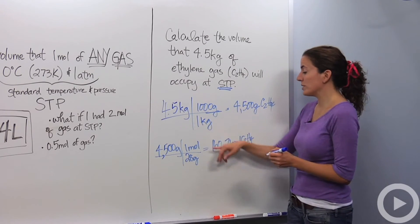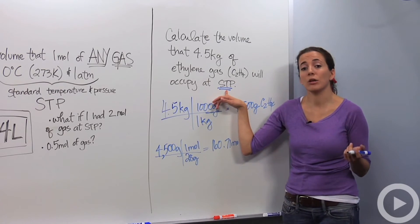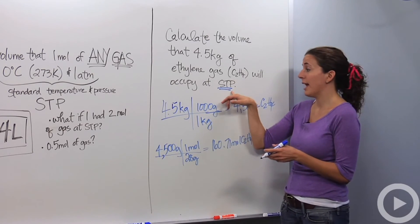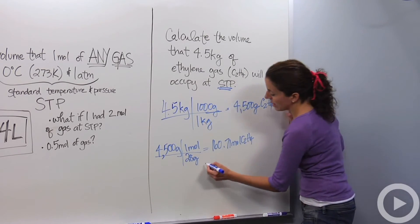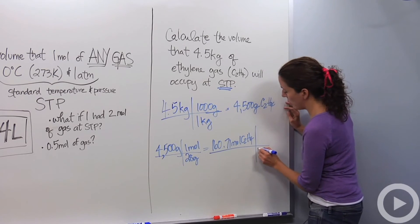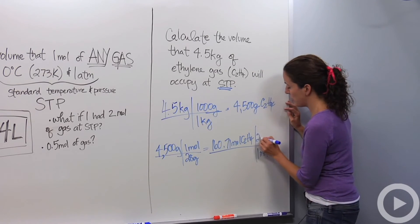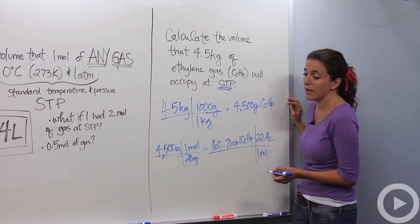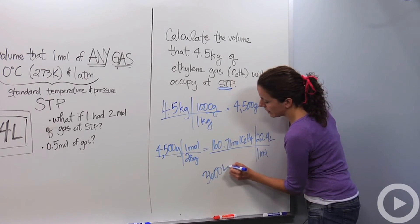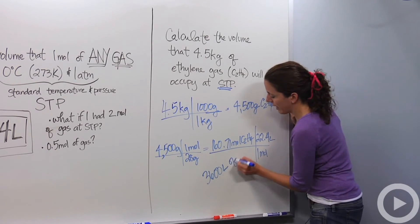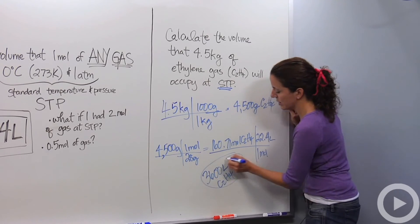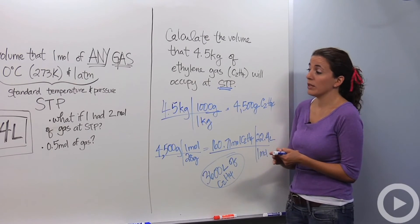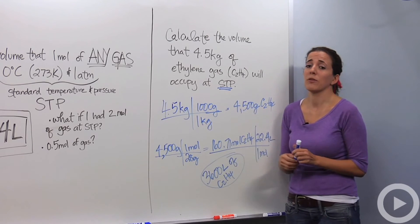So that's how many moles we have, and our conditions are STP. Now for the volume: I'm going to use my 22.4 liters per mole, because any gas at STP is going to be 22.4 liters per mole. I'm going to multiply 160.71 moles times 22.4 liters per mole, and I get 3,600 liters. That's a lot of ethylene gas at STP conditions. So that is molar volume — how we can use this volume in virtually everything as long as we're dealing with conditions at STP.